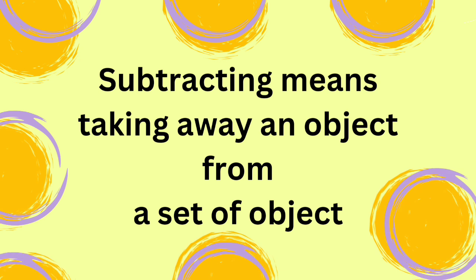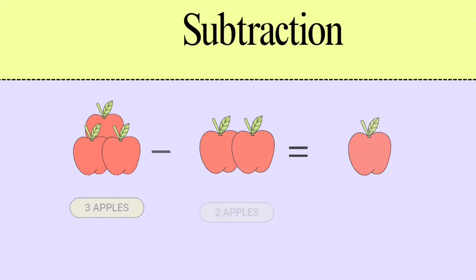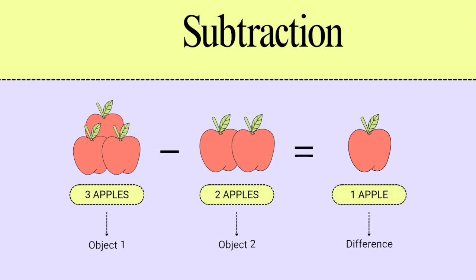Let's understand it with examples. If we subtract three apples from two apples, then the answer will be one apple.